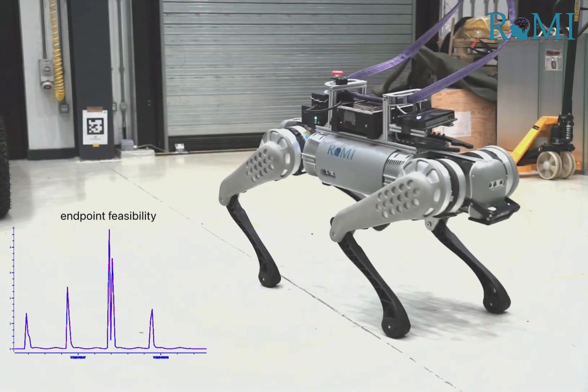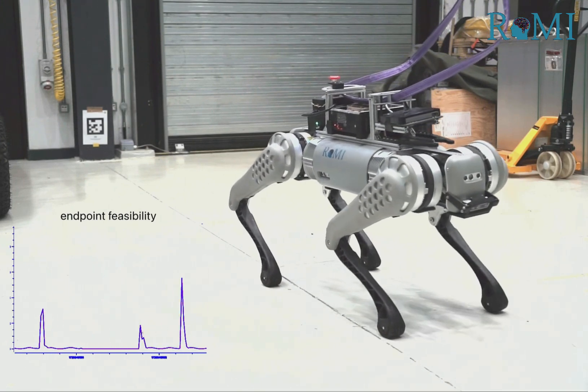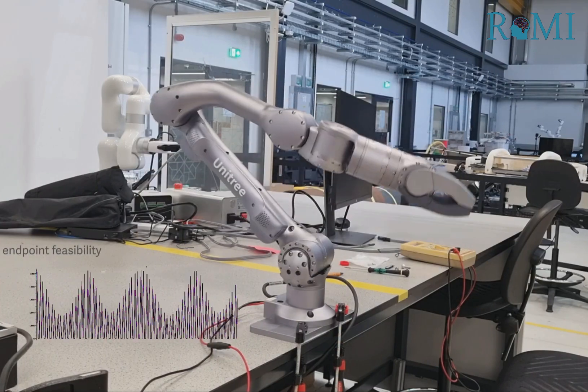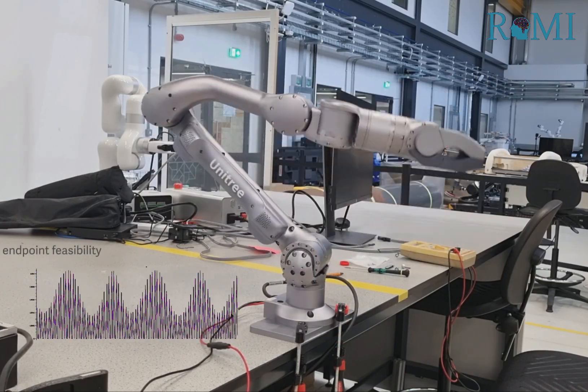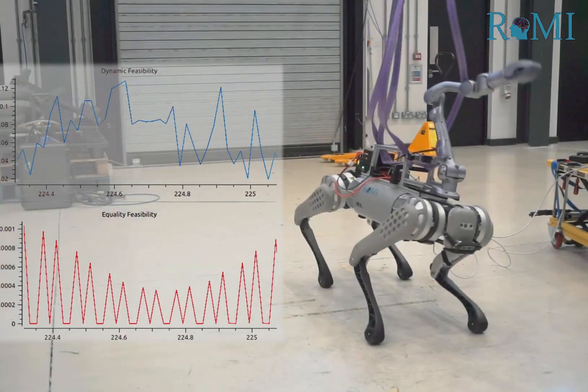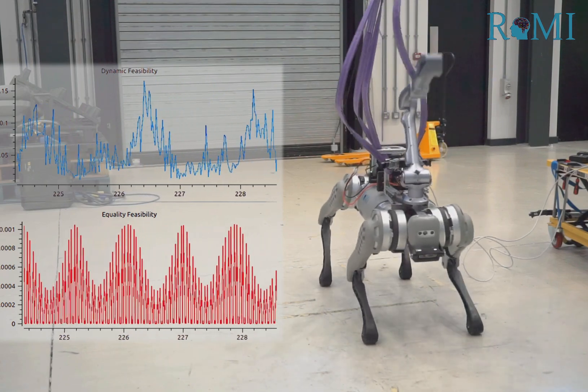For instance, our endpoint DDP rapidly reduces endpoint infeasibilities to the target point.